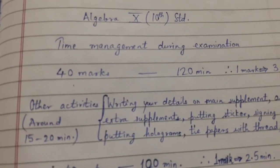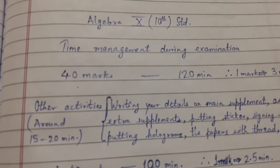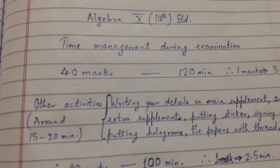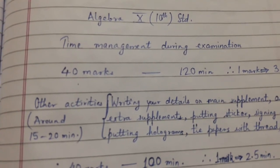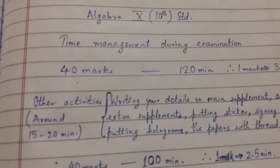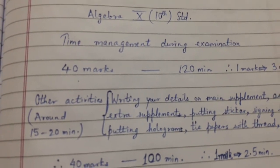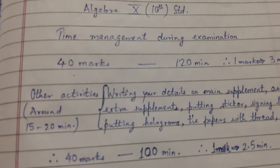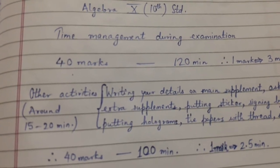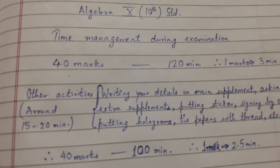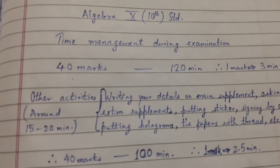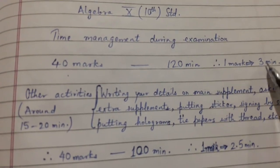Friends, today's topic of discussion is time management during examination for the board paper Algebra 10th standard. So it is for 40 marks and for two hours. That means that one mark should get completed in three minutes.